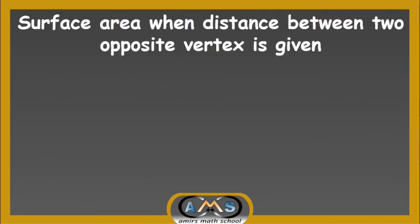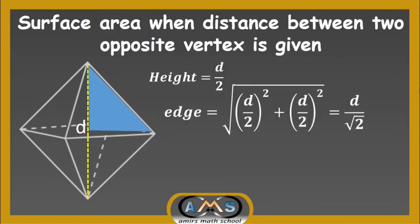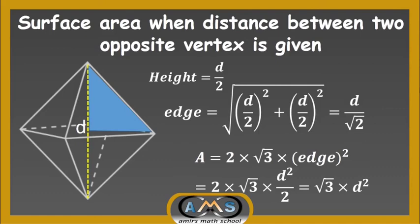Now let's find the surface area when the distance between two opposite vertices is given. As before, we find h = d/√2 and substitute into the total surface area formula: A = 2√3 × h². Substituting, we get A = 2√3 × (d/√2)² = 2√3 × d²/2 = √3 × d². So when the distance between two vertices is given, the total surface area is √3 × d².